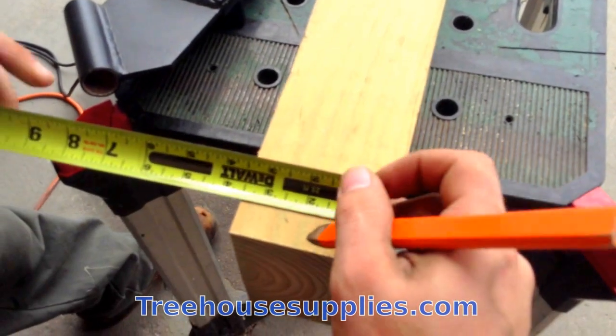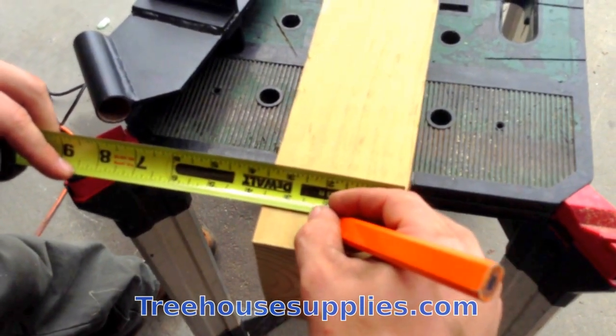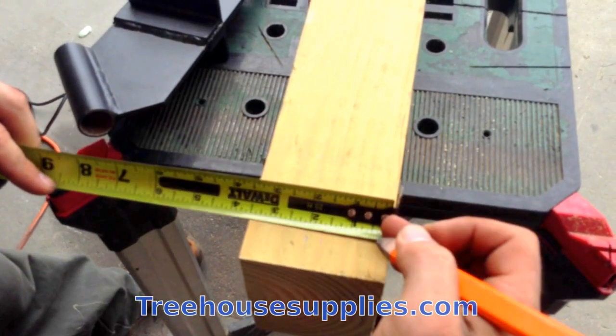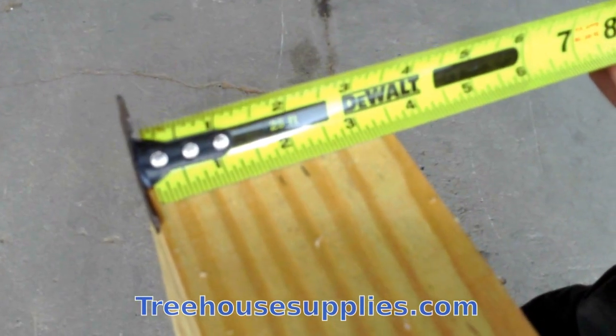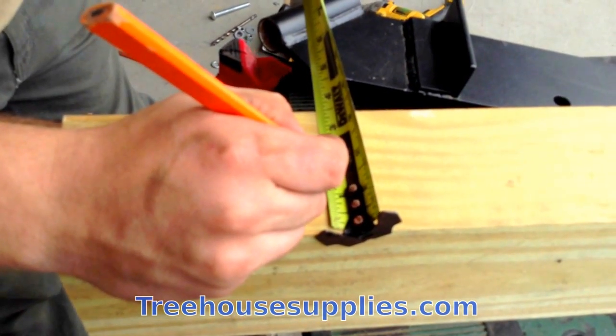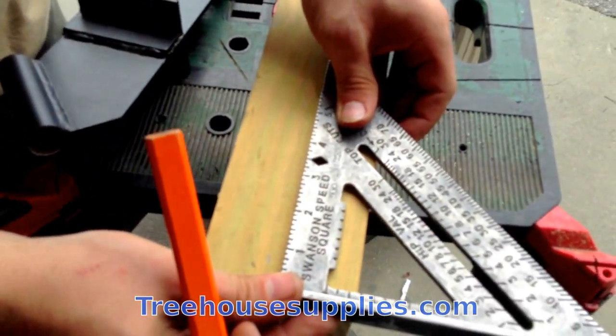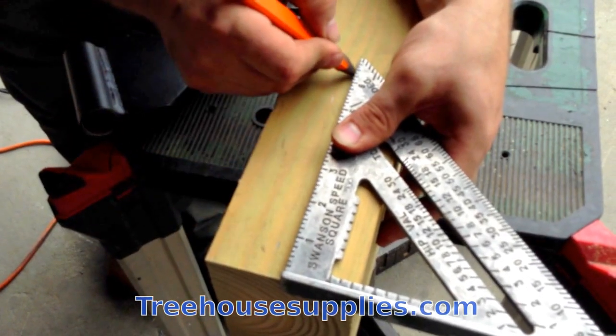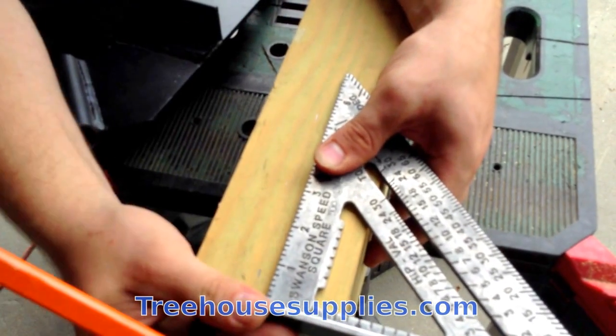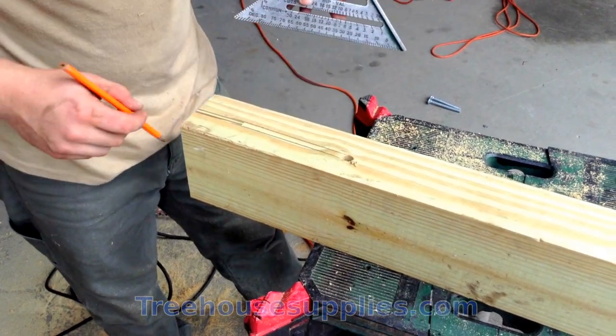Starting on the end of our 4x6, with the 3-1/2-inch side facing up, make a mark at 1-5/8 and a mark at 2 inches. Now make these same two marks 9 inches from the end. Using a straight edge, draw two lines connecting these marks.